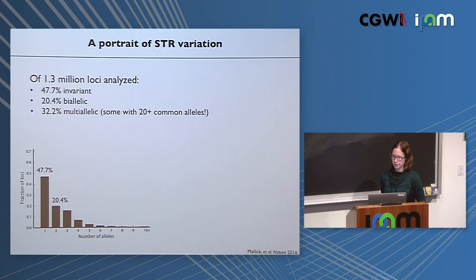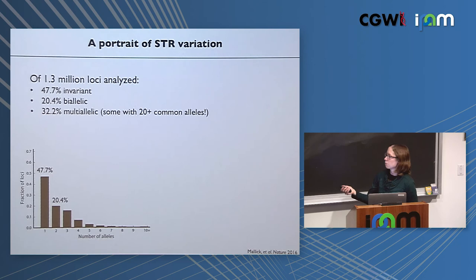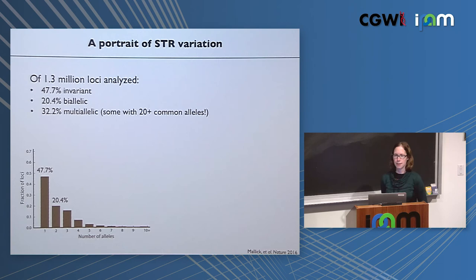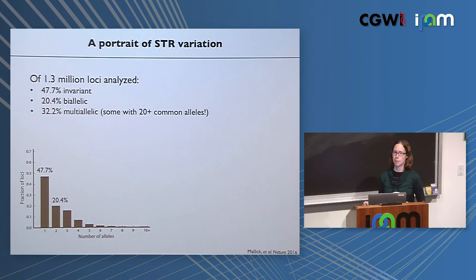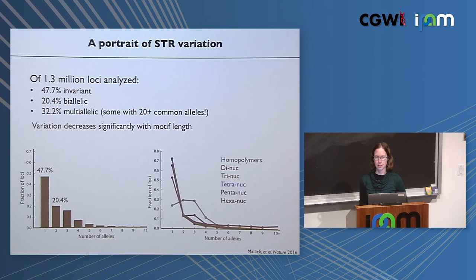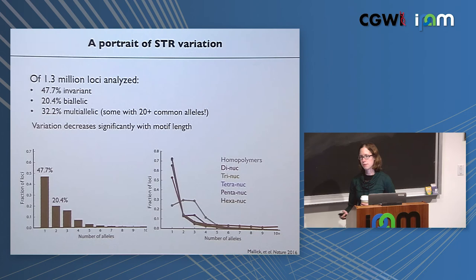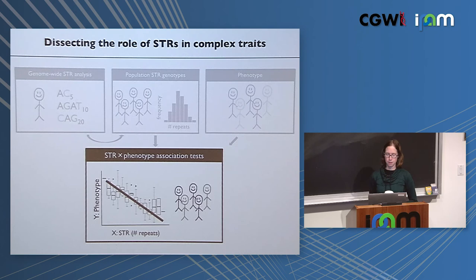We can use these catalogs for many things. Of the 1.3 million loci analyzed that passed filters, about half of STRs are invariant across samples, 20% are biallelic like SNPs, and about a third are multiallelic — many extremely so, with up to 20 different common alleles. Breaking this down by repeat unit length shows that homopolymers tend to be much more polymorphic, while longer repeat units are more likely to be fixed across individuals. Now we'd like to combine these genotypes with phenotype information for association studies.